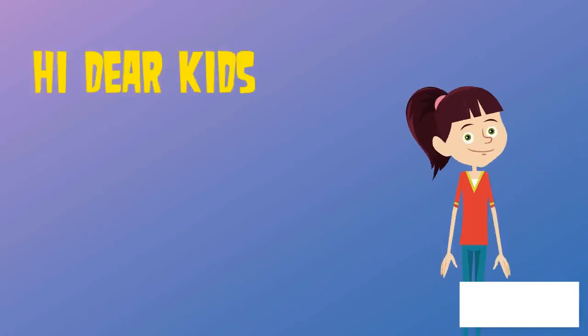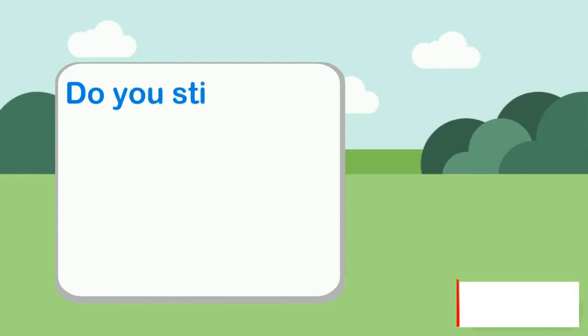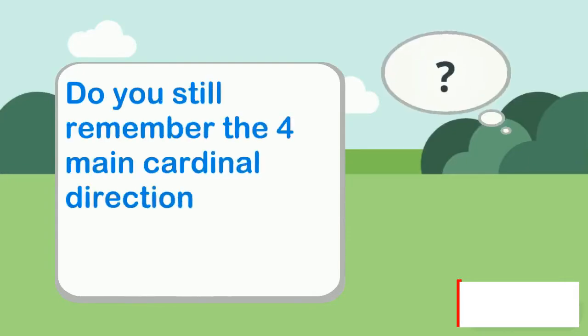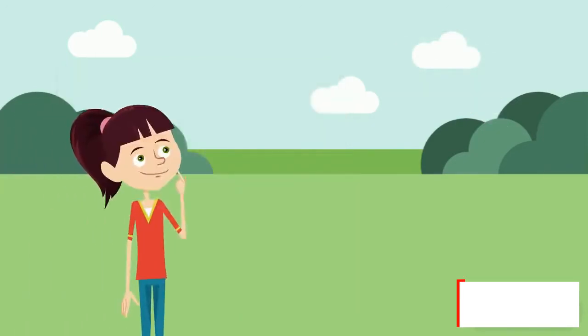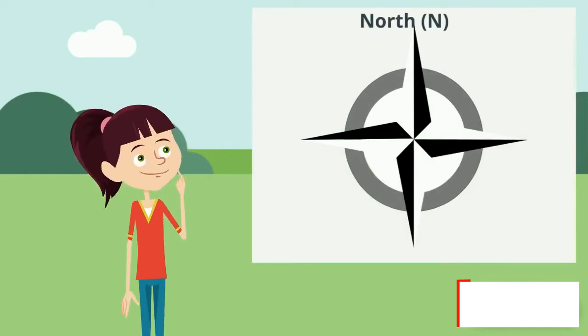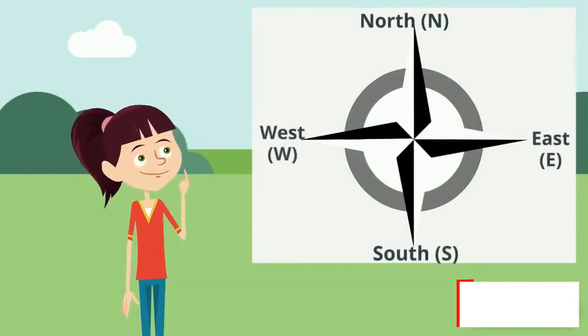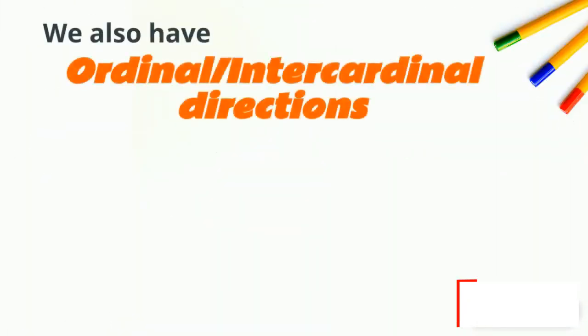Hi dear kids, welcome to another lesson. Do you still remember the four main cardinal directions from our previous lesson? Let's take a look at the compass rose. We have north, south, east, and west. We also have ordinal or intercardinal directions.